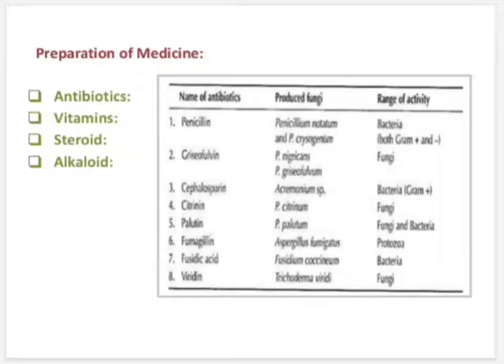Mushrooms also contain minerals like sodium, calcium, potassium, and phosphorus; vitamins like B, C, D, and K; and very little fat. These are recommended as ideal foods for heart patients and diabetics. The above-mentioned fungi can grow artificially at the commercial level. Mushroom cultivation has recently gained considerable popularity and has contributed to the national economy in some East Asian countries.